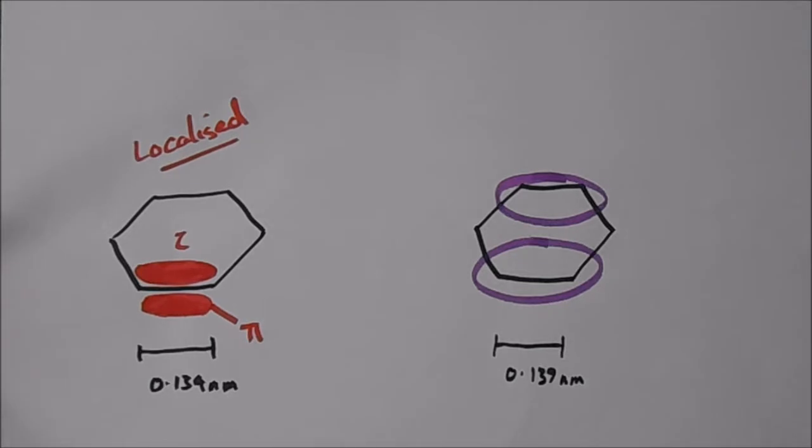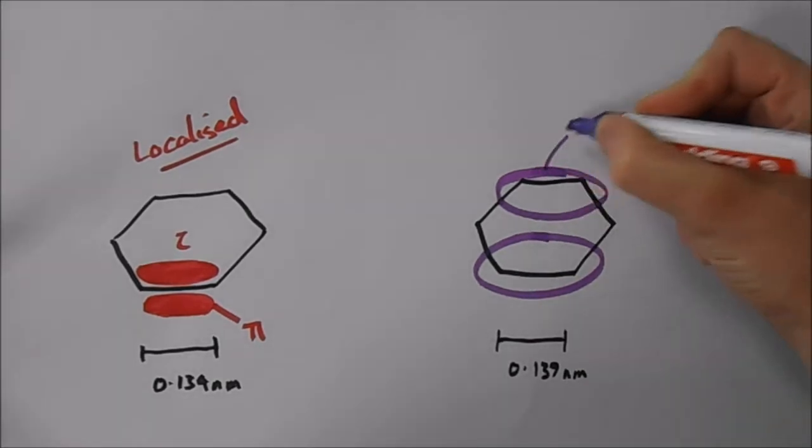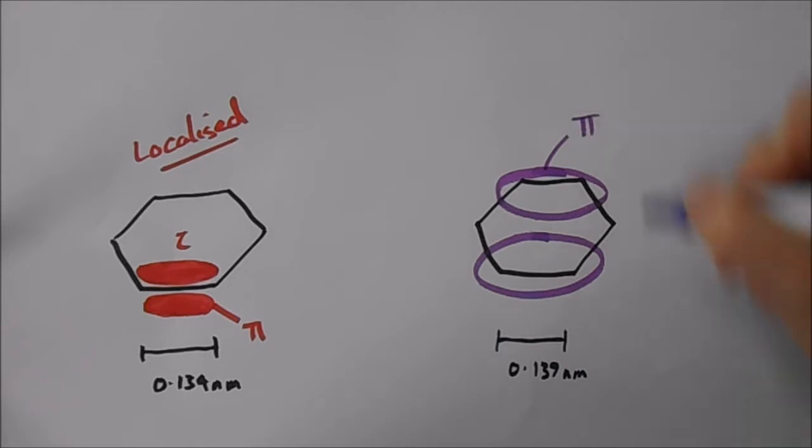So have a look at benzene. With benzene, we have again a pi system above and below the plane of the molecule.